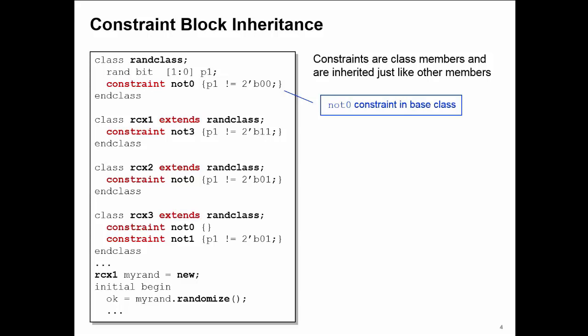In my first subclass RCX1, I have a constraint with the name NOT3 that says P1 cannot be equal to three. This will be layered on top of the NOT0 constraint. So for instances of RCX1, I have NOT0 and NOT3 constraints being applied.